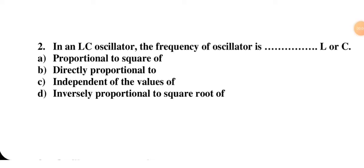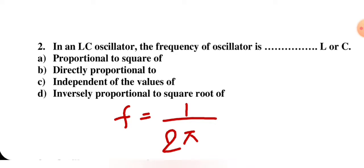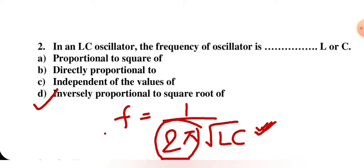The next question: in an LC oscillator, the frequency of oscillation is — proportional to L or C, directly proportional to, inversely proportional to, or independent of the values? The formula for resonance frequency in an LC oscillator is f = 1 / (2π√LC), where L is inductance and C is capacitance. So the correct option is D — inversely proportional to the square root of LC.